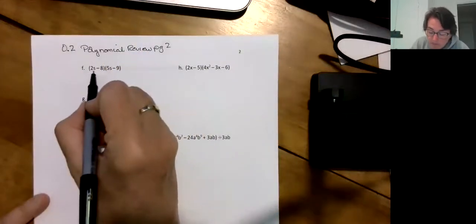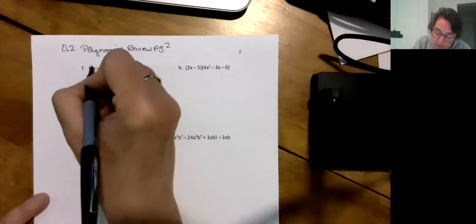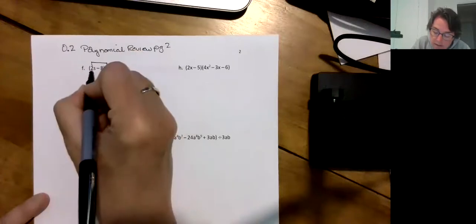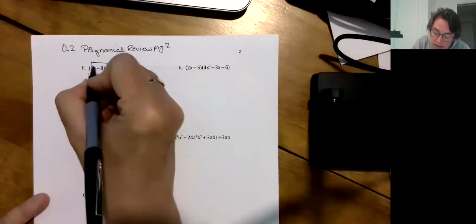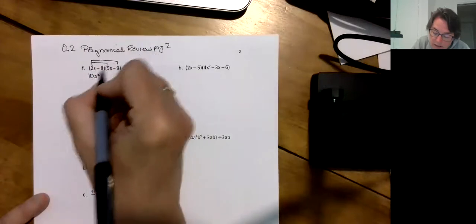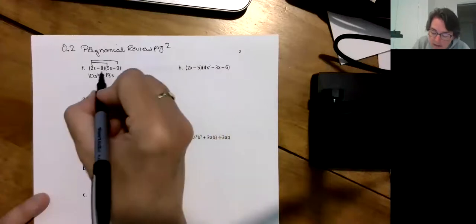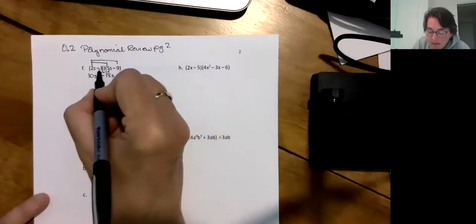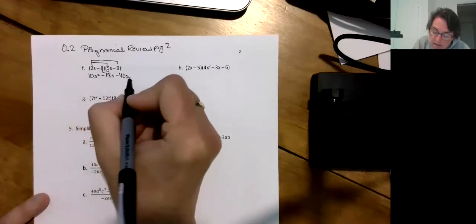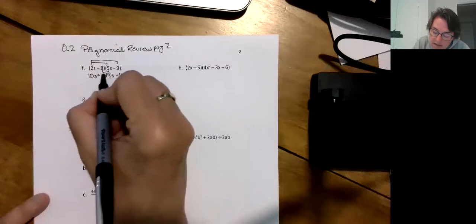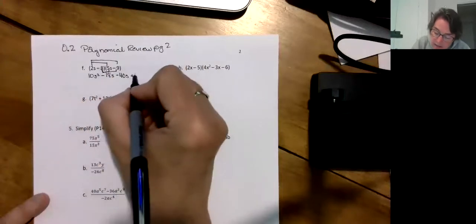We're still doing polynomials and this is a binomial times another binomial so we're going to FOIL. 2s times 5s is 10s squared. That's my first. Now my outsides, 2s times minus 9 so minus 18s. Now I'm going to do my insides. Minus 8 times 5s is minus 40s and then minus 8 times minus 9 is going to be plus 72.